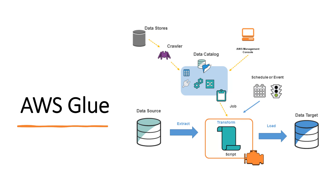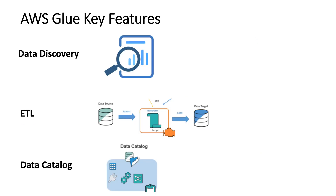Hello everyone. In this video we are going to talk about AWS Glue. AWS Glue is one of the most important services in AWS, especially if you are a data engineer, data analyst, or a data scientist looking to explore and understand your data better. AWS Glue is a serverless data integration service, meaning it is fully managed by AWS — you don't have to deploy or manage any servers.